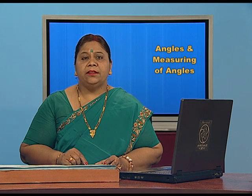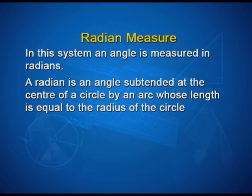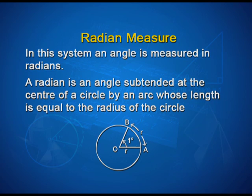The second system is radian measure. In this system, an angle is measured in radians. A radian is an angle subtended at the center of a circle by an arc whose length is equal to the radius of the circle. In the figure, let AB be an arc of a circle with center O and radius r, such that the length of arc AB is equal to r. Then angle AOB will be 1 radian.